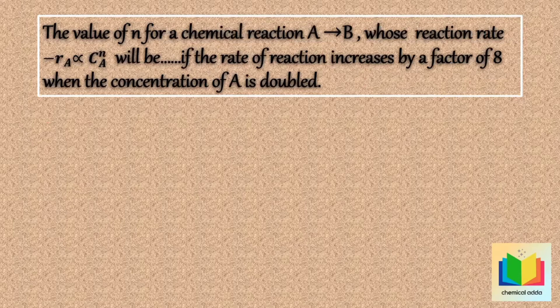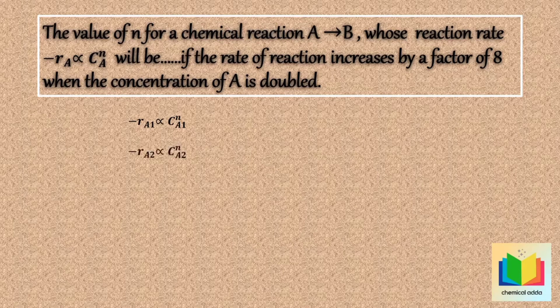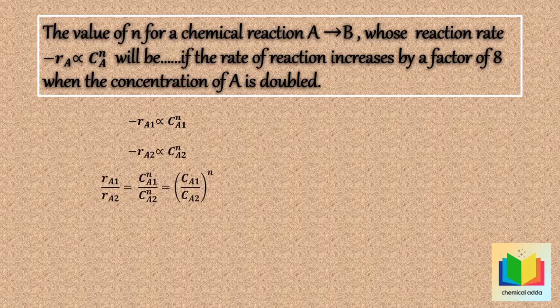Given: reaction rate is proportional to cA raised to n. For the initial condition, the rate of reaction can be written as: minus rA1 is proportional to cA1 raised to n. For the second condition, the rate of reaction can be written as: minus rA2 is directly proportional to cA2 raised to n. If we divide the first condition rate by the second condition rate, we get rA1 divided by rA2 equal to cA1 raised to n divided by cA2 raised to n, which can be written as cA1 divided by cA2, whole raised to n.